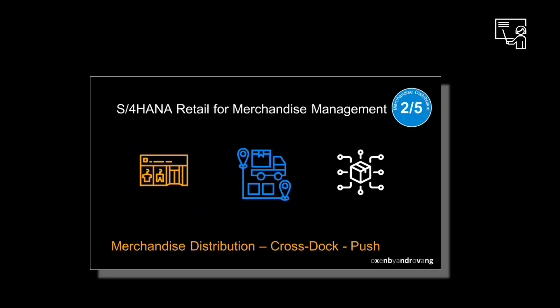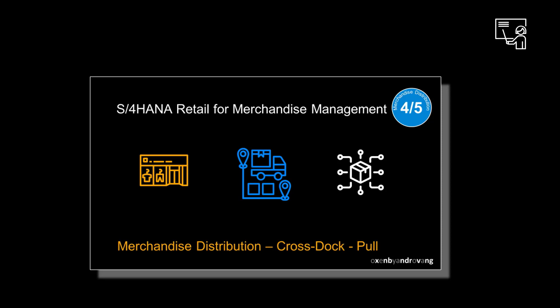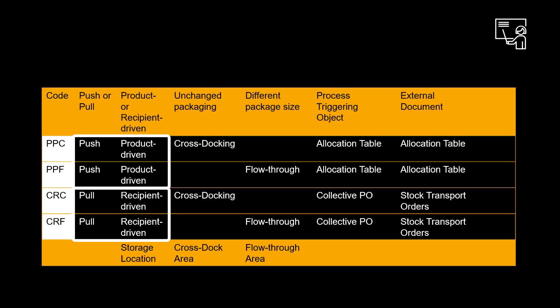Let us look at the basics of merchandise distribution. There are four main process variants, and we have provided four additional videos explaining each of them in detail, including a practical demo. The process can be either push or pull-driven, sometimes referred to as product/article-driven or recipient-driven.